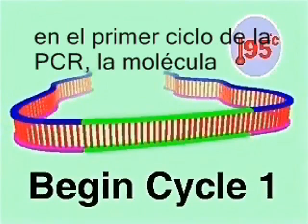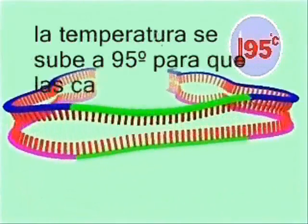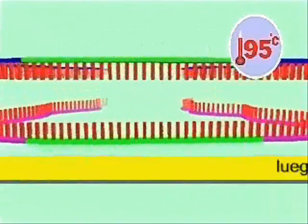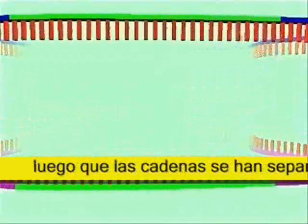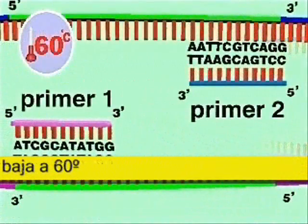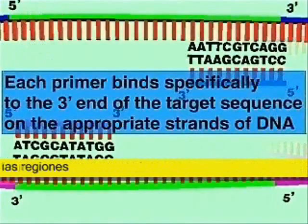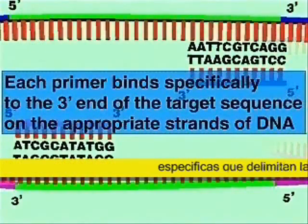In the first cycle of PCR, the DNA molecules are melted by raising the temperature to 95 degrees. After the strands have separated, the temperature is lowered to 60 degrees so that a pair of short oligonucleotide primers specific for the three prime ends of the target sequence can bind, one primer on each strand.